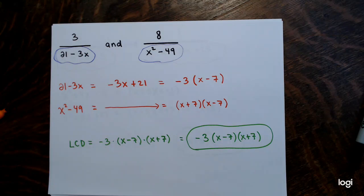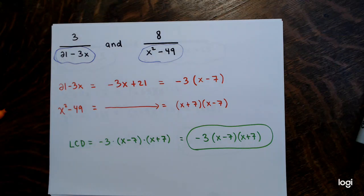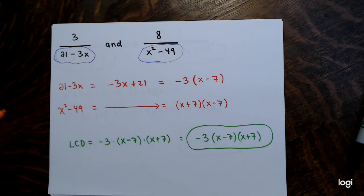To summarize the procedure: factor every denominator completely, then the LCD is the product of all the prime factors that appear in those factorizations, with each factor raised to the largest number of times it appears in any single factorization. Leaving the LCD in factored form is recommended for subsequent work with fractions.